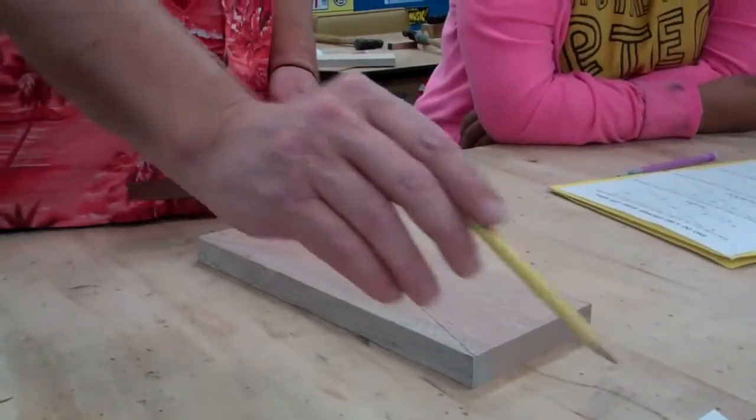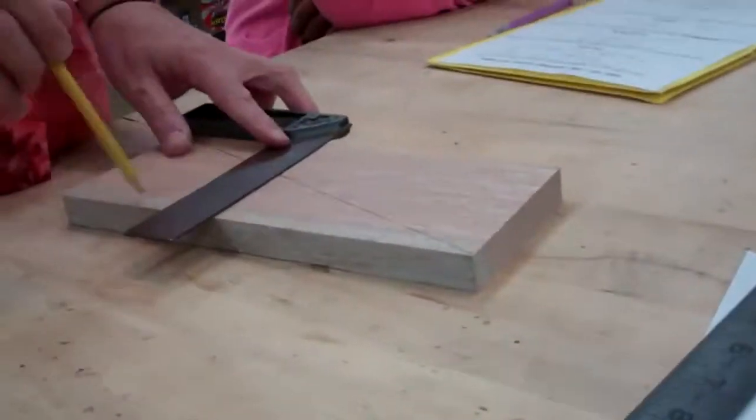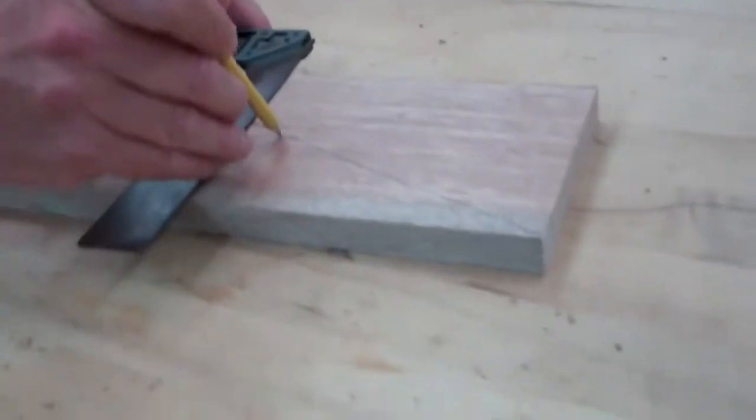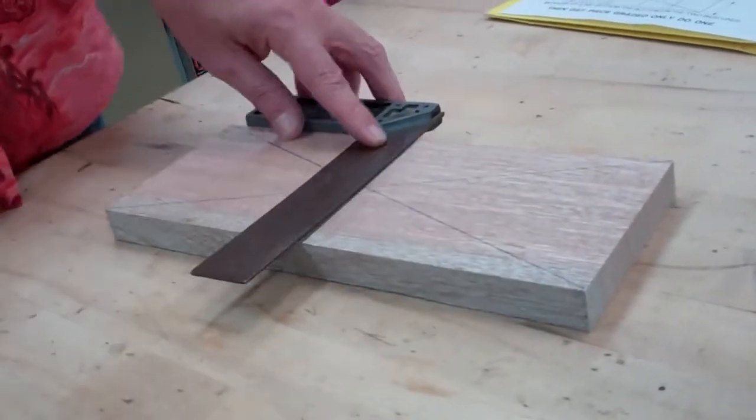Then you're going to draw a line up through the center using your tri-square. Put a dot in the center. Draw it through there.